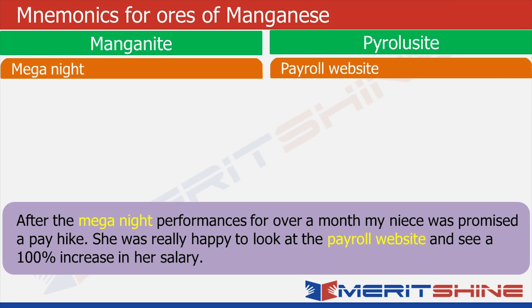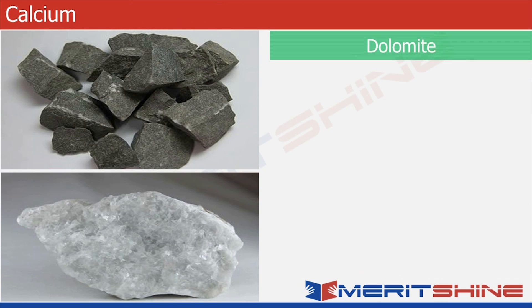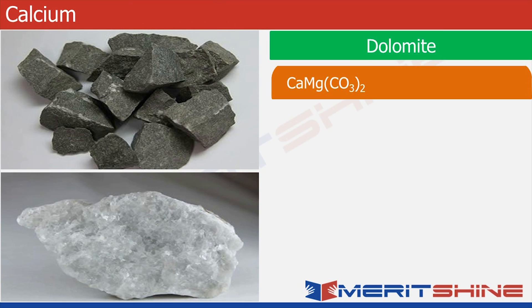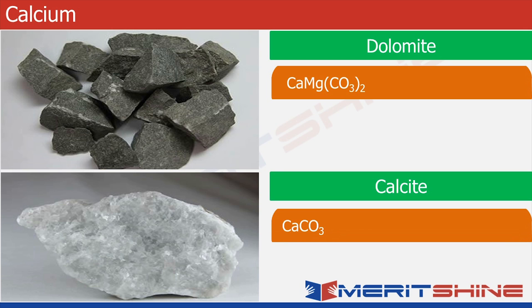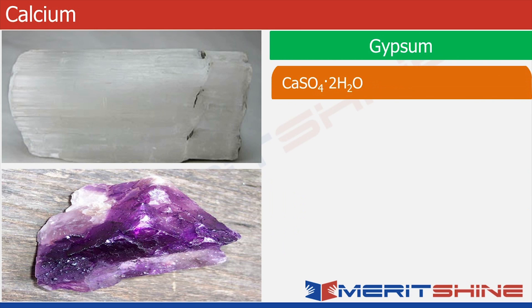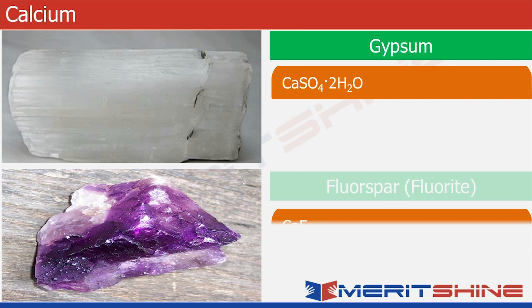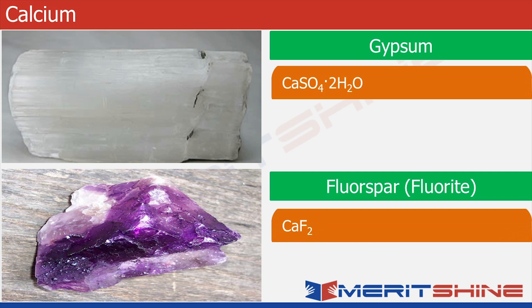Dolomite is the carbonate of calcium and magnesium — hope you remember the dynamite story. Then we have calcite which is calcium carbonate. Then we have gypsum which is calcium sulphate dihydrate. And we have fluorspar which is calcium fluoride.